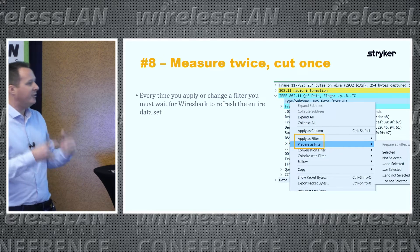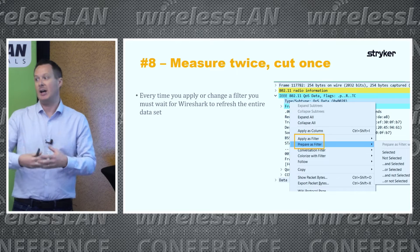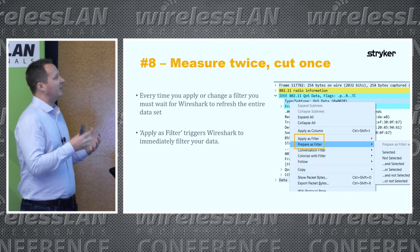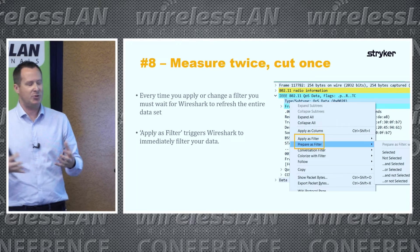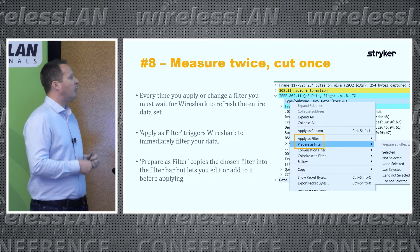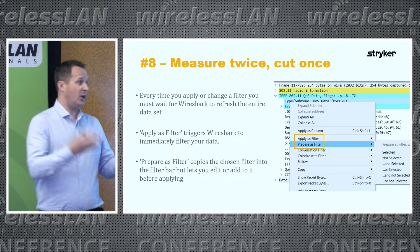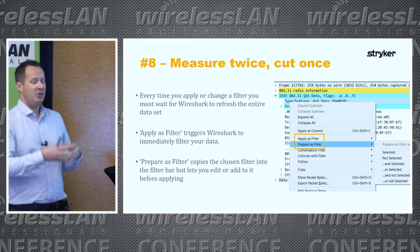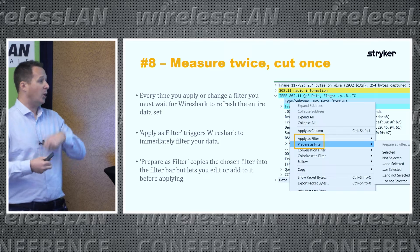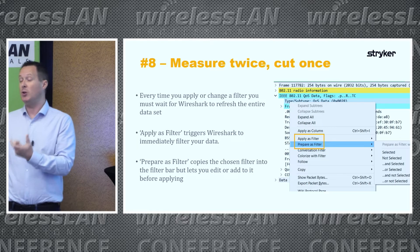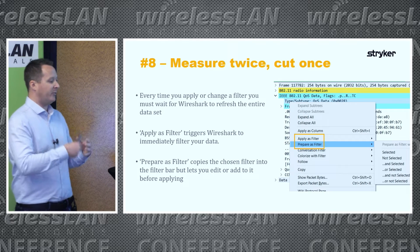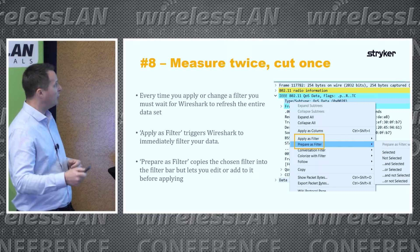Tip number eight: measure twice, cut once. Every time you filter in Wireshark it has to redisplay your data, which takes time. 'Apply as Filter' immediately applies the filter without letting you build or edit it first, so you sit through that processing unnecessarily. Instead, use 'Prepare as Filter' — it populates the filter bar with the correct syntax for the parameter you selected but doesn't apply it yet, allowing you to modify the BSSID or add additional filter conditions before running it.